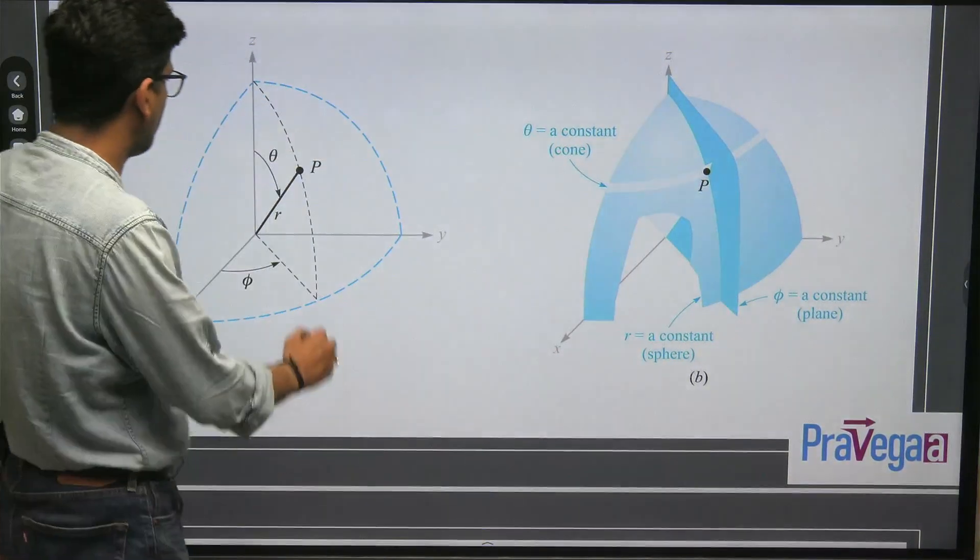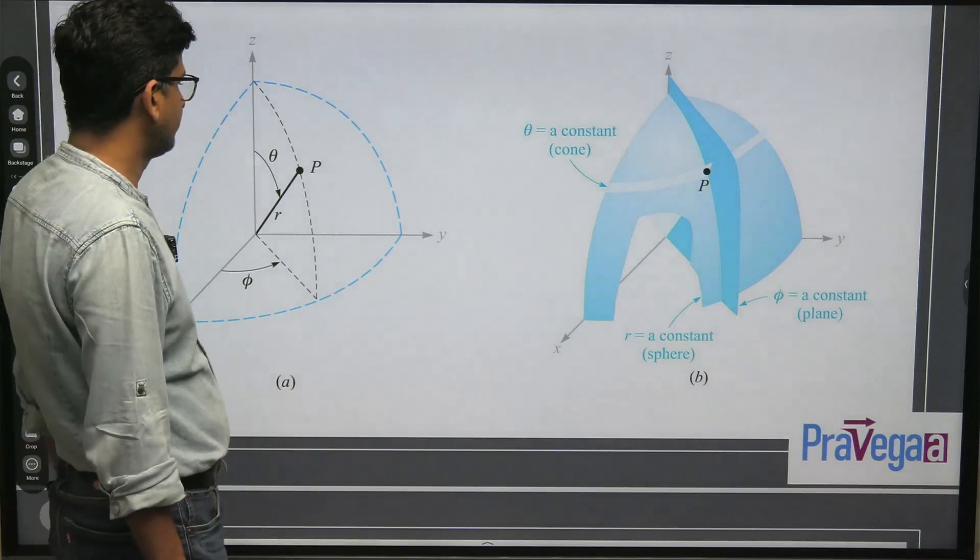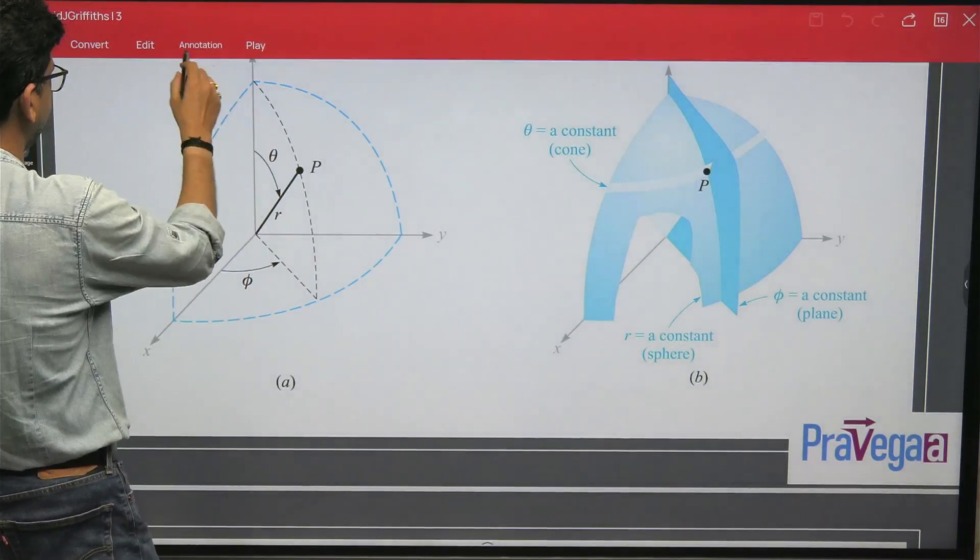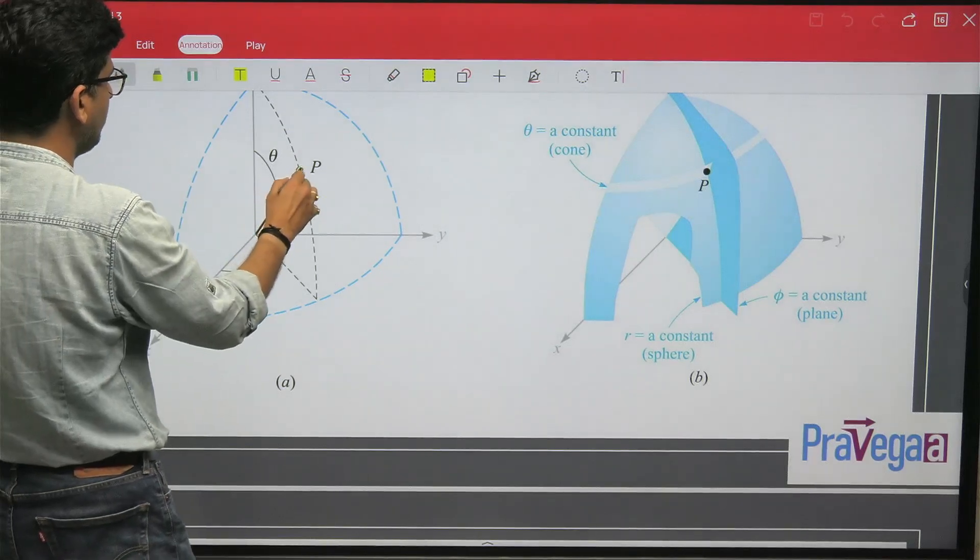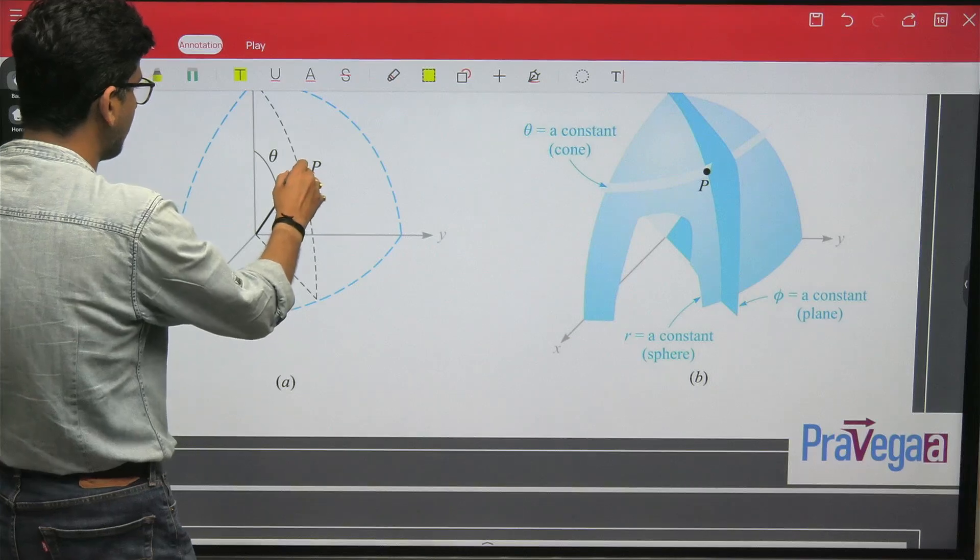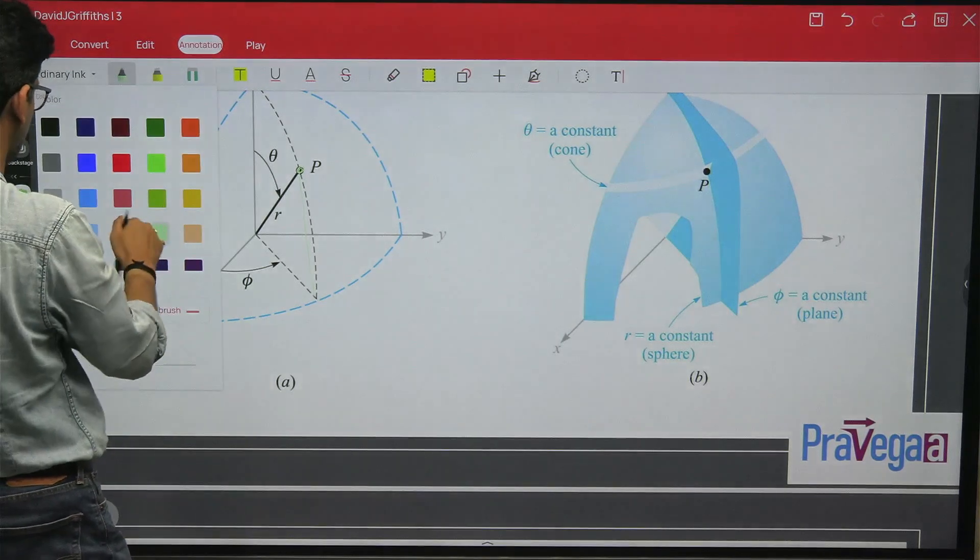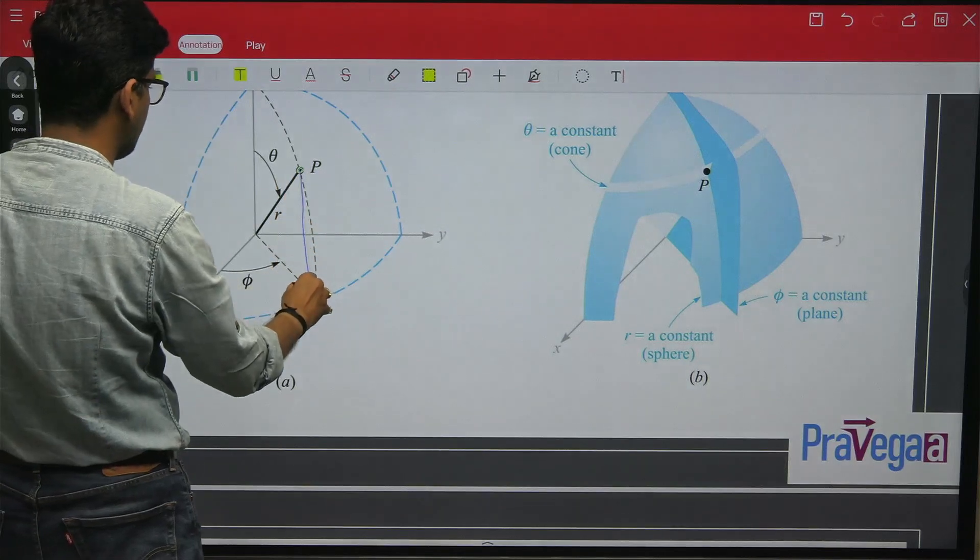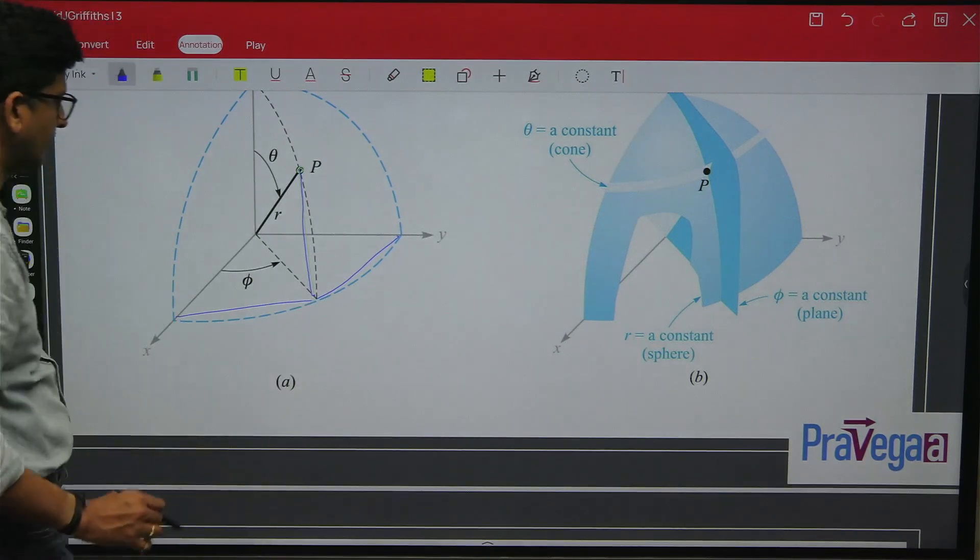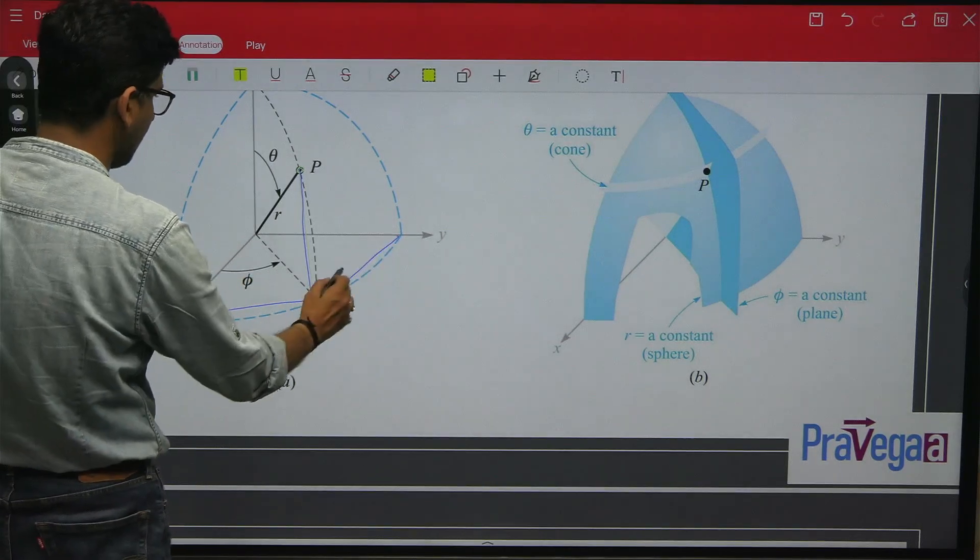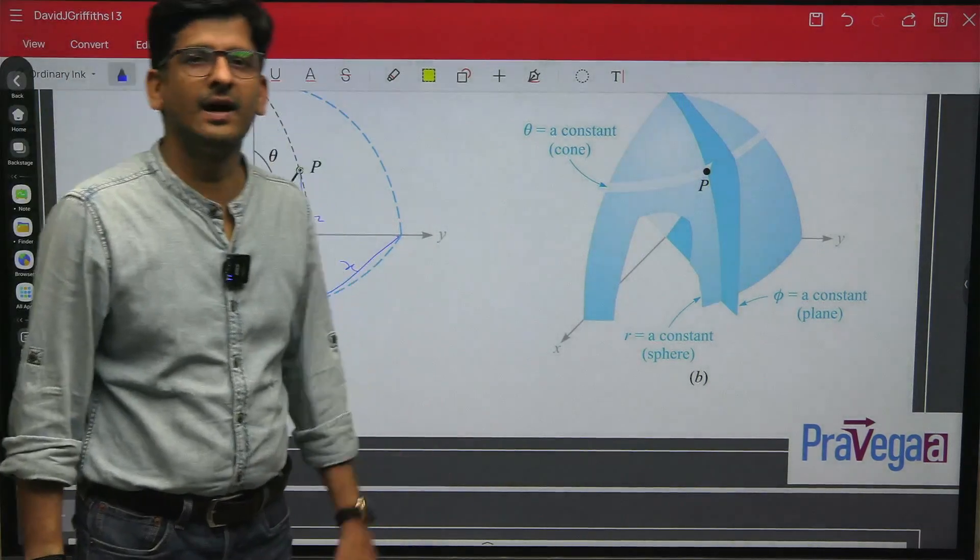If you have a point P located in space, you can represent it by a spherical polar coordinate system. Suppose this is your X, Y, and Z axis, and then this is the point P. Now just drop a perpendicular on the X-Y plane like this. Then put the perpendicular on the X axis and perpendicular on the Y axis. So this distance along the X axis will become X, this distance along the Y axis will become Y, and the perpendicular distance will become Z, as you already know in Cartesian coordinate system.